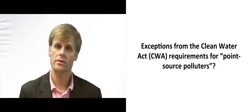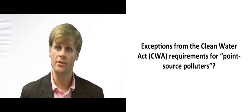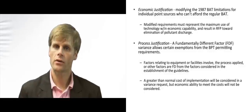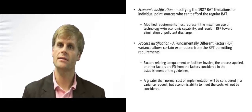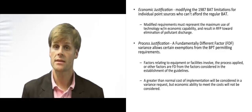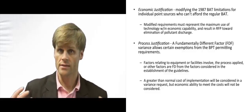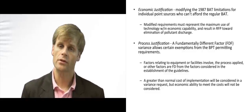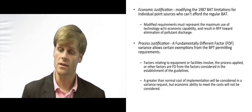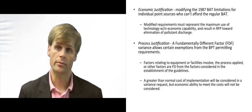How can a point source polluter under the Clean Water Act request an exception or a variance from the Clean Water Act's requirements? There are two primary variances that the EPA will grant. The first is an economic justification, and it looks to the best available technology requirement — that is, that the polluter choose the best available technology for discharging the least amount of pollutant possible.